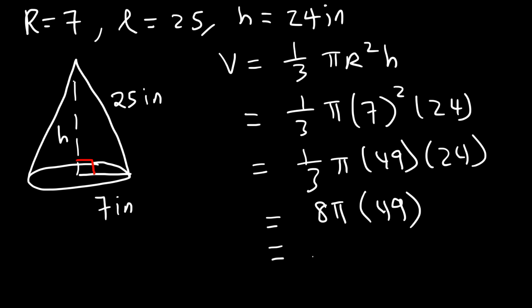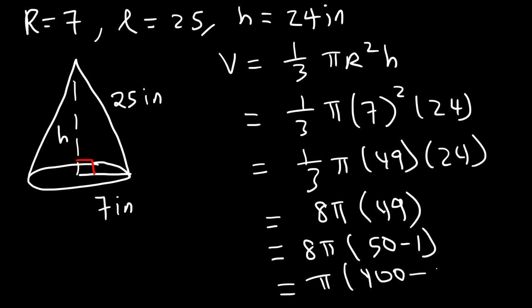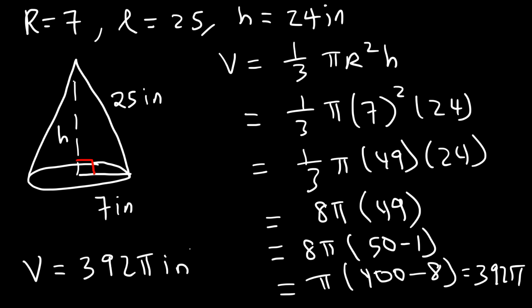To multiply 8 times 49 mentally, replace 49 with 50 minus 1. 8 times 50 is 400, and 8 times 1 is 8, so 400 minus 8 is 392. The volume is 392π cubic inches.